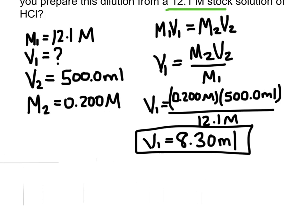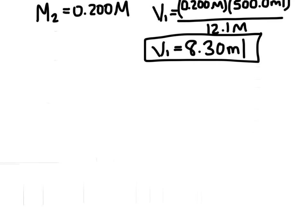What this means is I'm going to take 8.3 milliliters of that concentrated solution and add it to a container. Then I would pour water in until I got up to 500 mils. Just add water, diluting it up to that 500 milliliter mark, and we have a diluted solution.